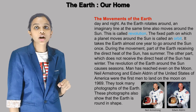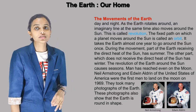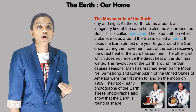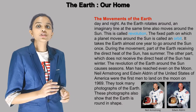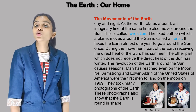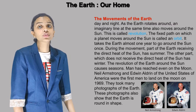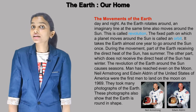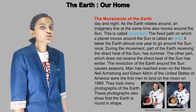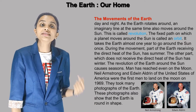As the earth rotates around an imaginary line, it also moves around the sun. This is called revolution. The fixed path on which a planet moves around the sun is called an orbit. It takes the earth almost one year to go around the sun once. The revolution of the earth around the sun causes the seasons.